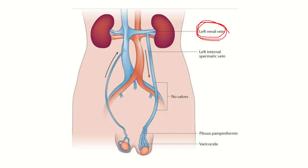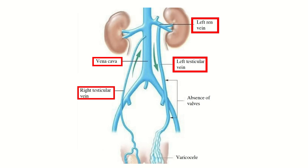On the left side, the testicular vein drains into the left renal vein. But on the right side, the testicular vein drains into the inferior vena cava (IVC). This is the exception, because for arterial supply, both the right and left testes receive blood from the testicular artery, both originating from the abdominal aorta. But for venous drainage it is different — the right testicular vein drains into the inferior vena cava, while the left testicular vein drains into the left renal vein.